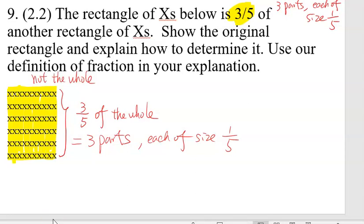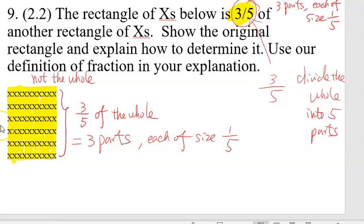One mistake I saw students make before was thinking, okay, we divide this into five equal parts, which is incorrect. If you're thinking we have three-fifths, that would divide the whole into five equal parts. But the problem is what we're given is not the whole. It's only three-fifths, which is a portion.